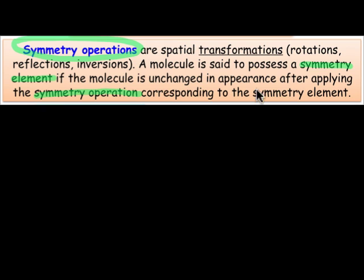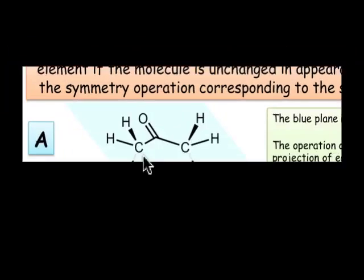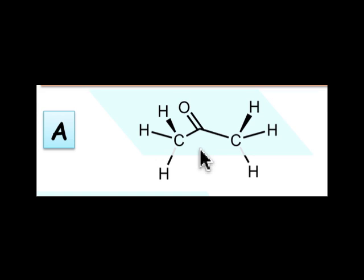For example, a molecule is said to possess reflection symmetry if, upon application of a mirror plane to that molecule, it remains unchanged in its appearance. Let's apply a reflection operation to this molecule of acetone to see if acetone possesses reflection symmetry.